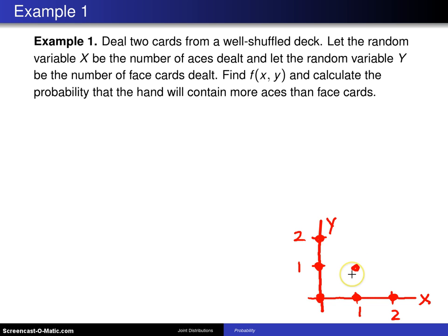And then just one possibility off the axes. That is one ace and one face card, for example, the ace of diamonds and the king of clubs. But that's it. Those are the six support values for the discrete random variables x and y.